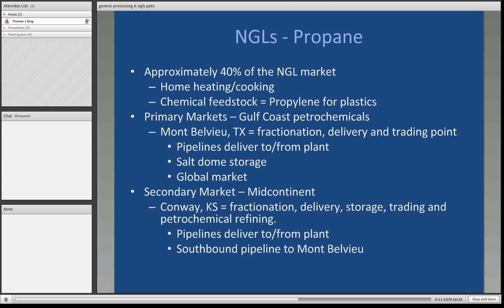Propane represents approximately 40% of the natural gas liquids market in the United States. Primarily it's used for home heating and cooking. It can also be used as a chemical feedstock to make propylene for plastics. The primary markets for propane are Gulf Coast petrochemicals. Mont Belvieu is the key natural gas liquid hub in the United States — it has a fractionation tower, it's a delivery and trading point, there are pipelines that deliver natural gas liquids to the plant as well as take-away to markets, it has salt dome storage, and it is a global market in terms of the ability to export liquids to other countries.